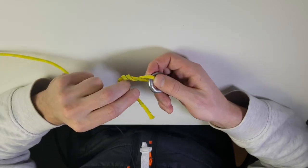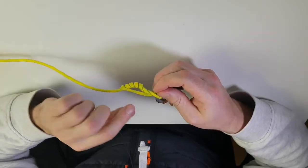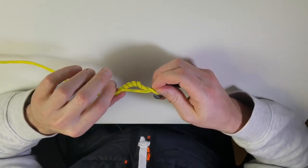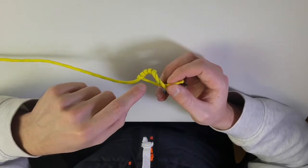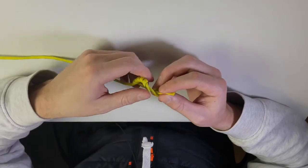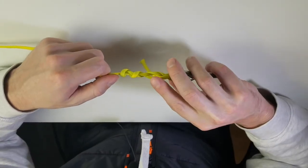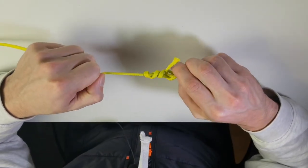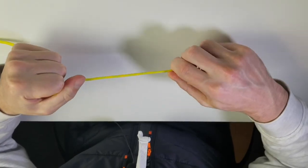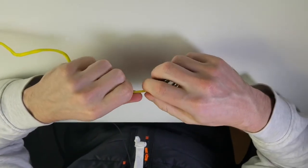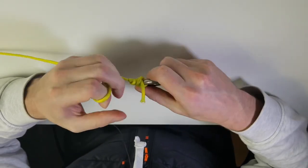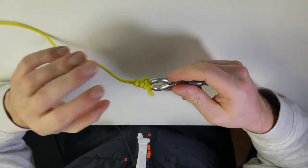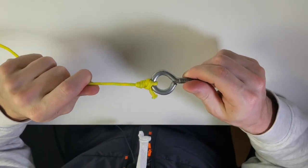Now instead of pulling this tight like we did on the original version, you're going to take the tag end here and loop it back through this loop right here. Then again, add some moisture to that, and then all you have to do is slowly pull it together just like that. Pull it tight, make sure your loops are cinched down nice and tight, tighten it up, clip off the tag end, and there is your improved clinch knot.